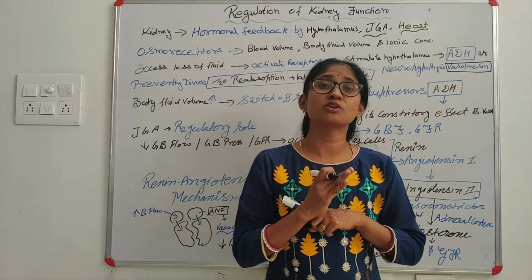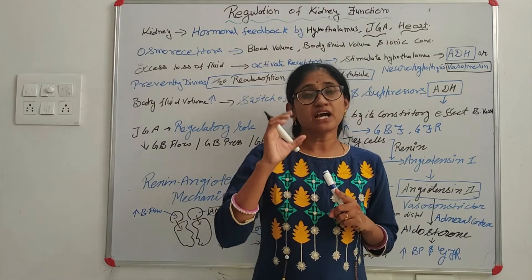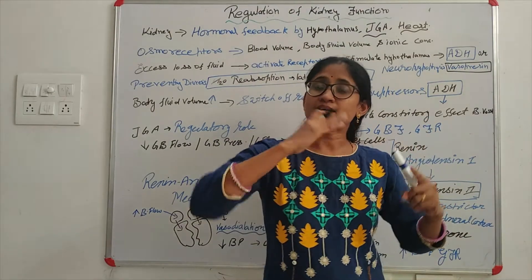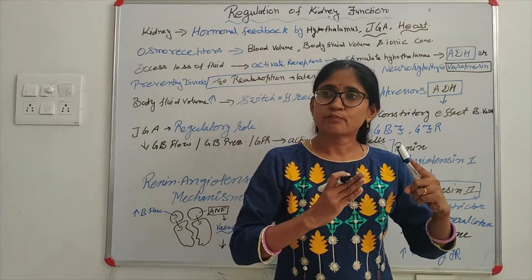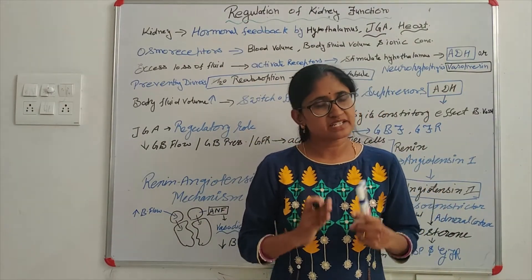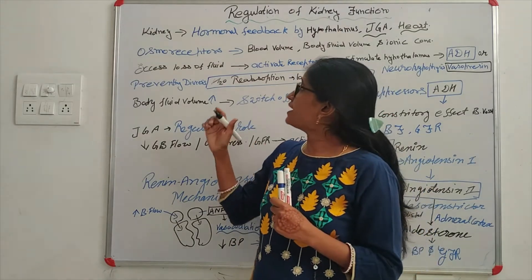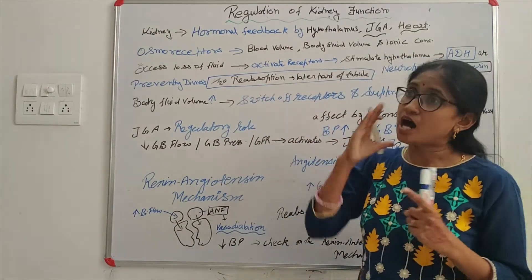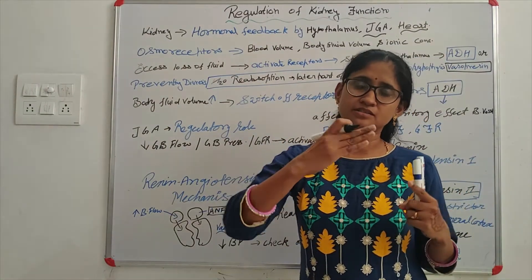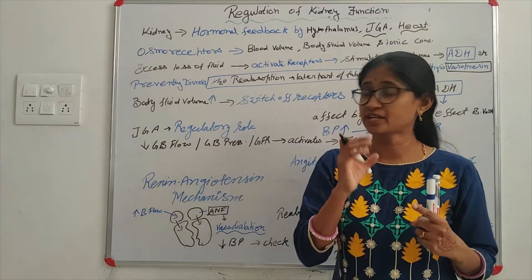We have studied the juxtaglomerular apparatus. This apparatus was formed where the vasa recta and the loop of Henle contact. There were some special cells stuck there. Now the third one is the heart. The heart releases atrial natriuretic factor.